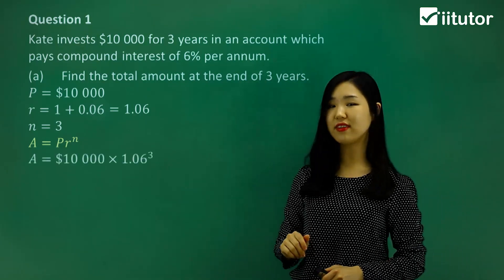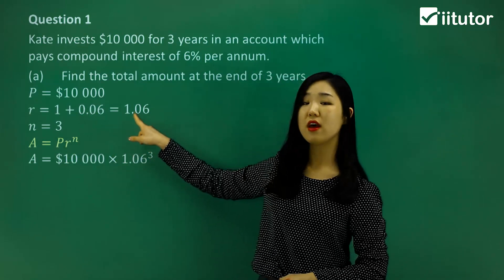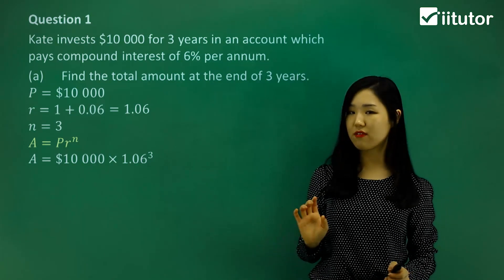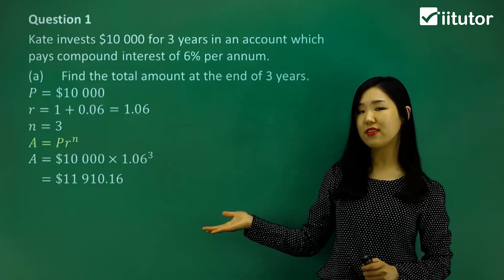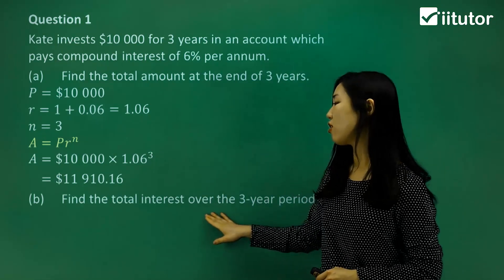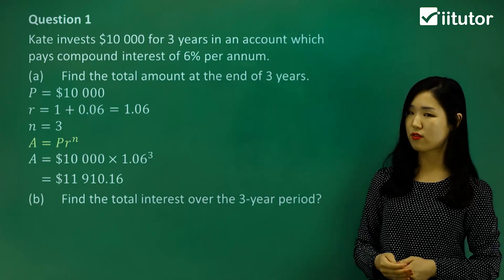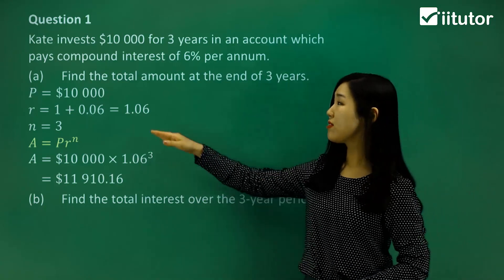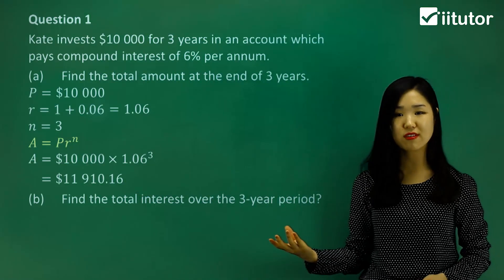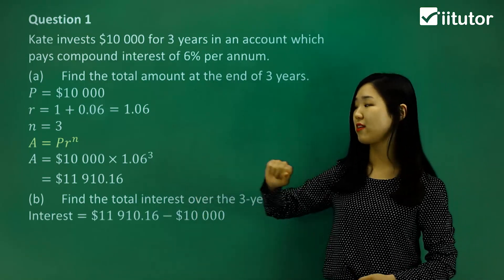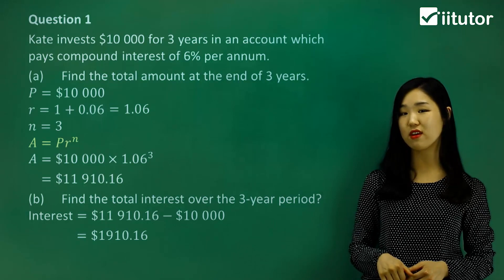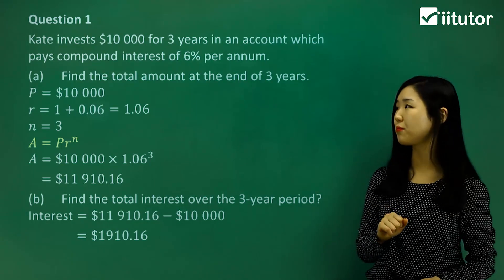Let's put it into our compound interest formula A = P·R^n: the principal is 10,000, R is 1.06, and the power is 3. Put it all into your calculator carefully and you'll get a value — you can see it's greater than what we started with because it has been compounded. For part B, we find the total amount of interest gained over the three-year period. The difference between the grown value and the principal must be the interest — just subtract away the principal from the total amount.